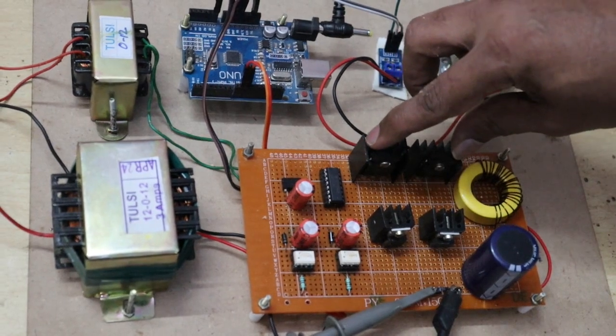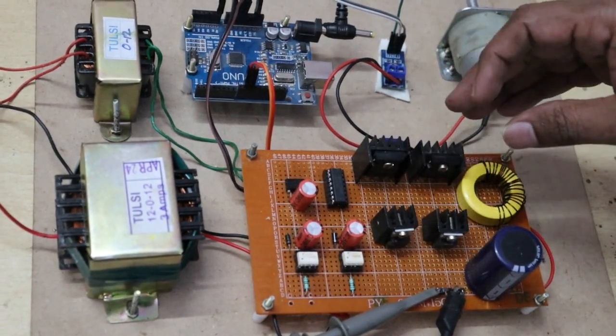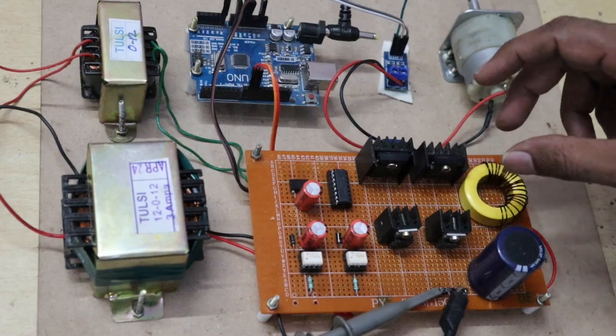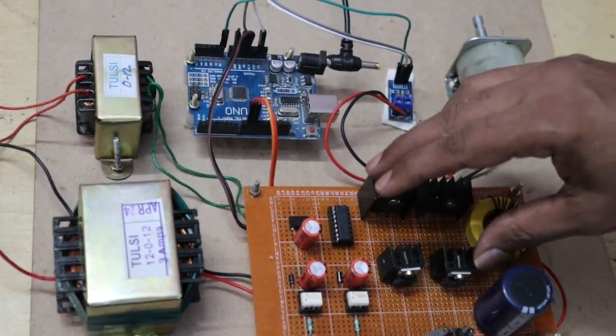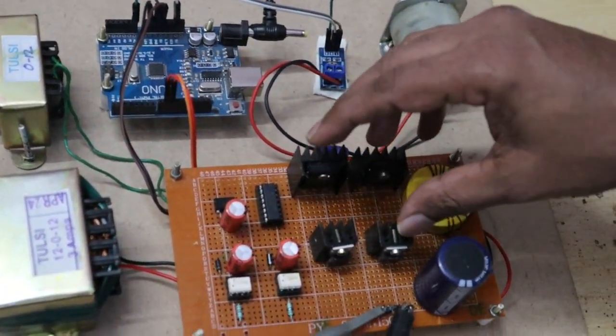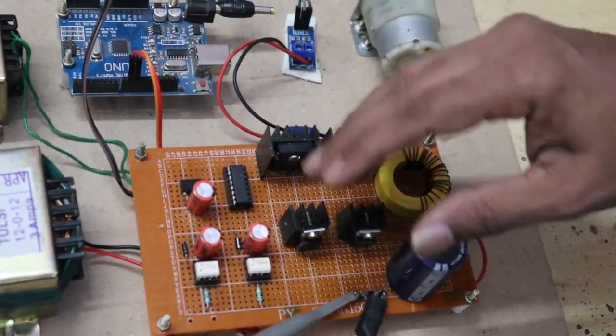Although the number of switches is increased, we are reducing three diodes plus one DC link capacitor. So this converter has the advantage of a reduced number of components.